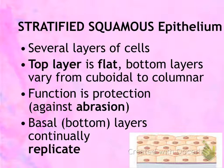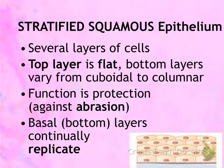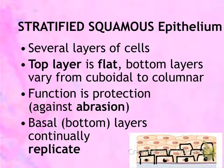The first epithelium we're going to talk about is the stratified squamous epithelium. Remember that squamous means flat, so the top layers will be flat — the cells will be flat and the nuclei are going to be flat also. Toward the basement membrane, the cells are going to be somewhat taller and might have a cuboidal appearance. Always look at the apical surface to determine that they are squamous. Notice that there are multiple layers of cells — this is why it's called stratified squamous.